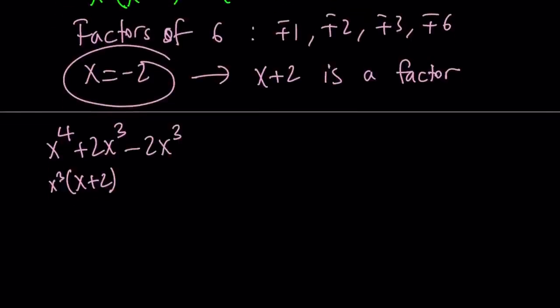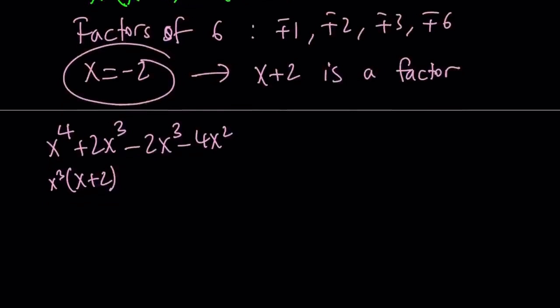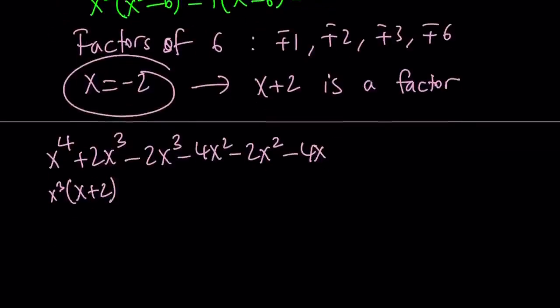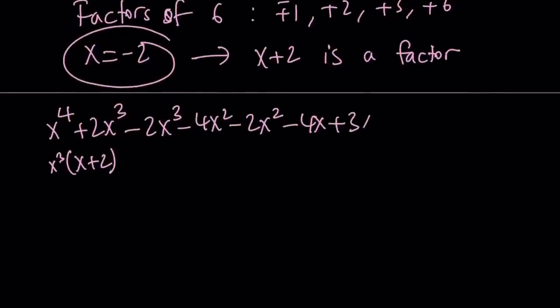Subtract 2x cubed. Now it's balanced. But negative 2x cubed must be followed by negative 4x squared. Again, for the same reason. And then, of course, I have negative 6x squared. So I have to follow this by negative 2x squared. And now it's balanced. But negative 2x squared must be followed by negative 4x, so that x plus 2 is a factor. But we only have negative 1x, so we have to add 3x. And finally, when we add the 6, we're going to be good to go.